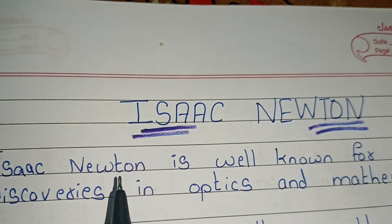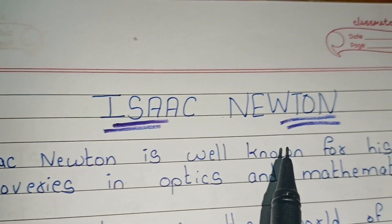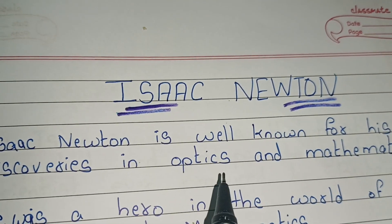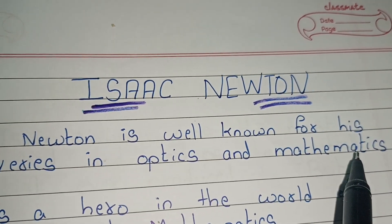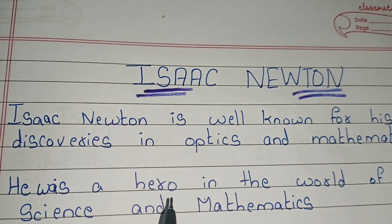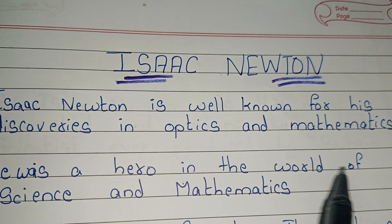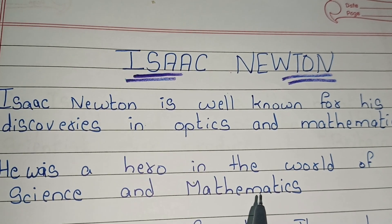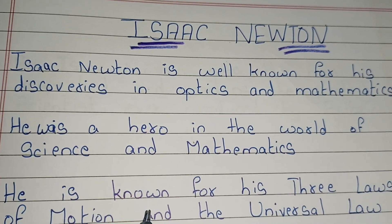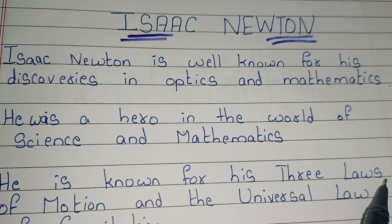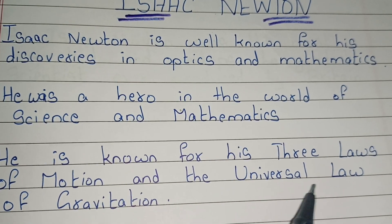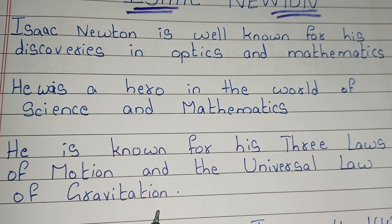Isaac Newton is well known for his discoveries in optics and mathematics. He was a hero in the world of science and mathematics, known for his three laws of motion and the universal law of gravitation.